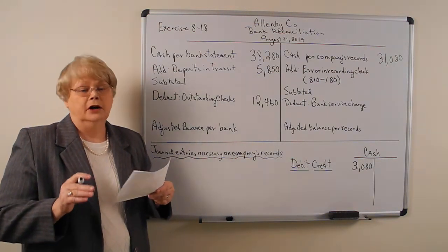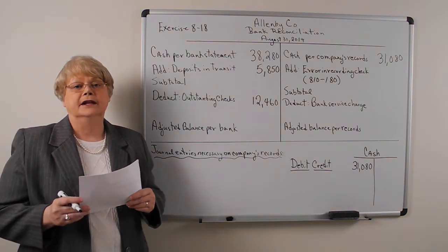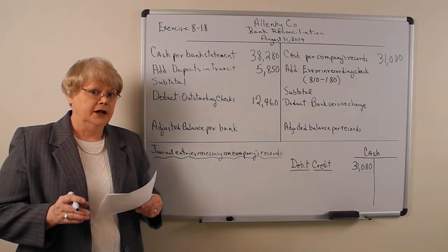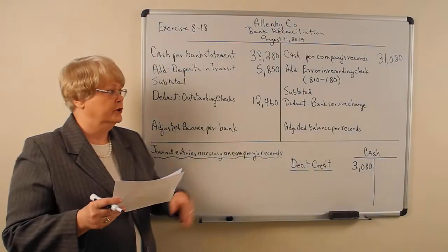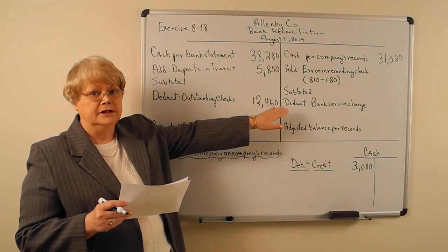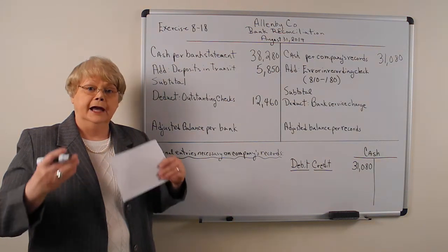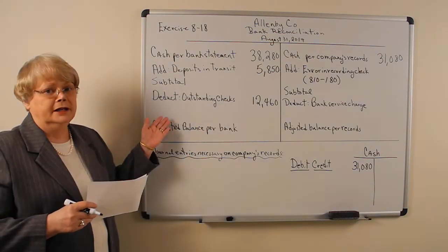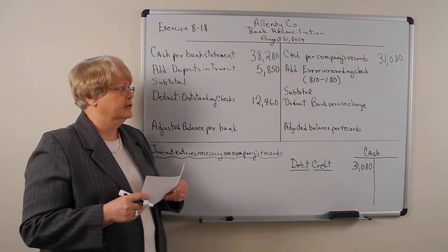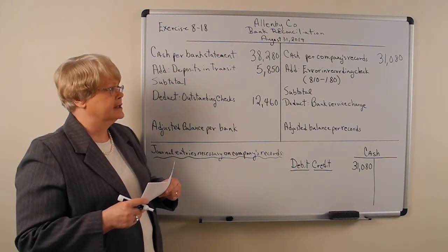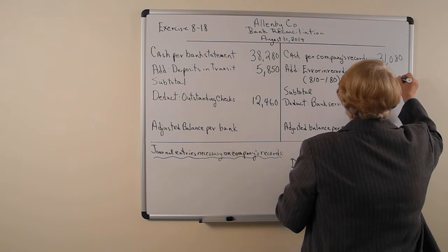A check was written for $180 in payment of an account payable, but it was erroneously recorded in the check register as $810 — that's a transposition. The bank will pay it correctly for $180, but on the accounting records you wrote it as $810 when it should have been $180, meaning you deducted more than you should have. We have to add back the difference. The check was $180, we recorded $810, the difference is $630. We need to add that $630 back to the balance per the company's accounting records.